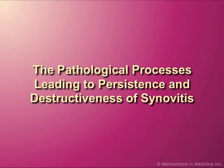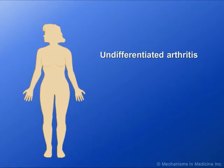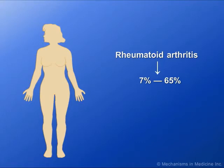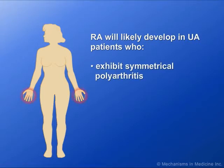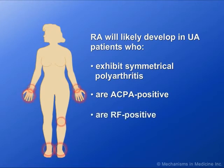The pathological process is leading to persistence and destructiveness of synovitis. Undifferentiated arthritis, or UA, may progress to rheumatoid arthritis, RA. Depending on the characteristics of the study cohort, the literature suggests that 7% to 65% of UA cases will evolve into RA. This event is most likely to occur in patients who display symmetrical polyarthritis and are anti-citrullinated protein antibody ACPA positive and/or rheumatoid factor, or RF, positive.